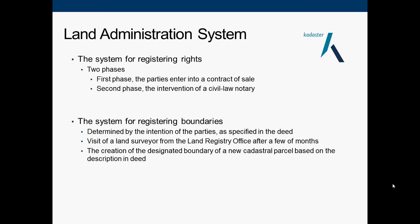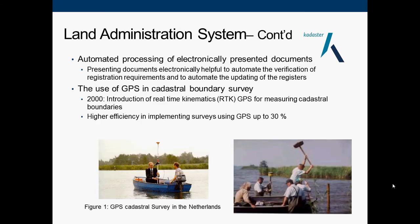For the system of registering boundaries, the two parties first determine the boundary based on their deed. After a land surveyor visits the land, the land surveyor confirms this with the land registry office. The designated boundary is then created as a cadastre parcel based on the description of the deed. There is also automation in the process of producing each document.